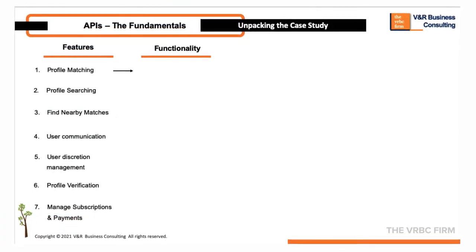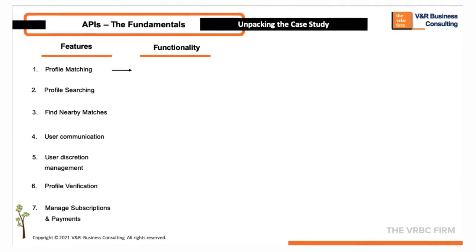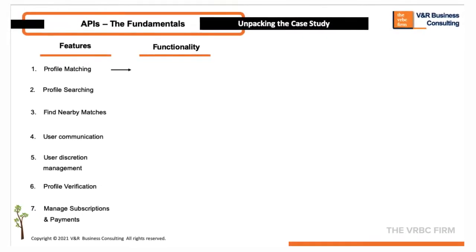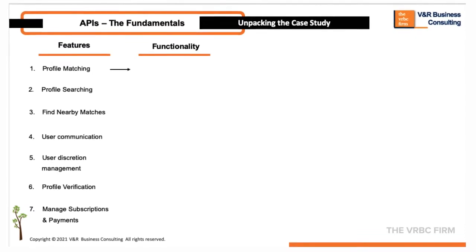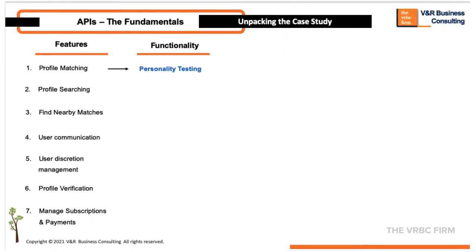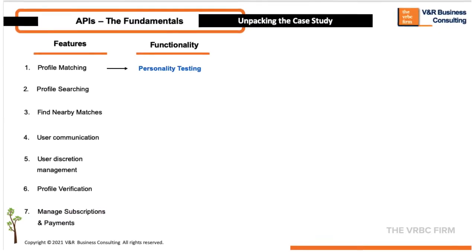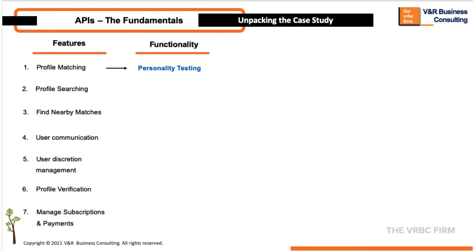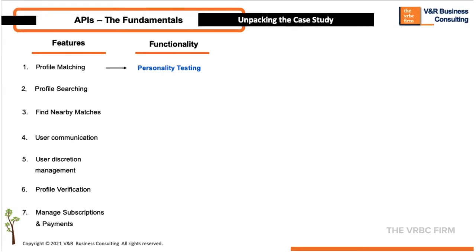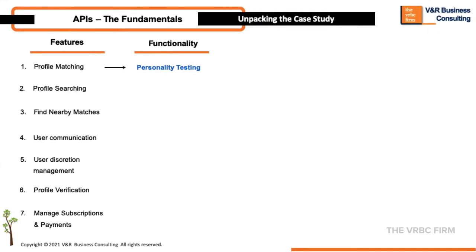Now let's look at the functionality required to bring our list of features to life. You will need some method to match users. It would be nice to just match fields such as hair color, but we all know human beings are much more complex than that, so let's rather use personality tests as the basis of the user matching exercise.